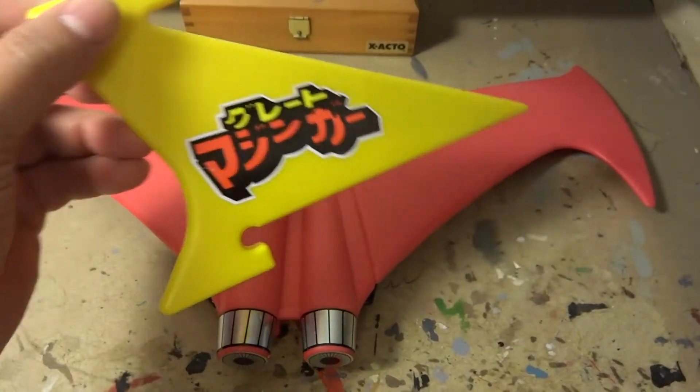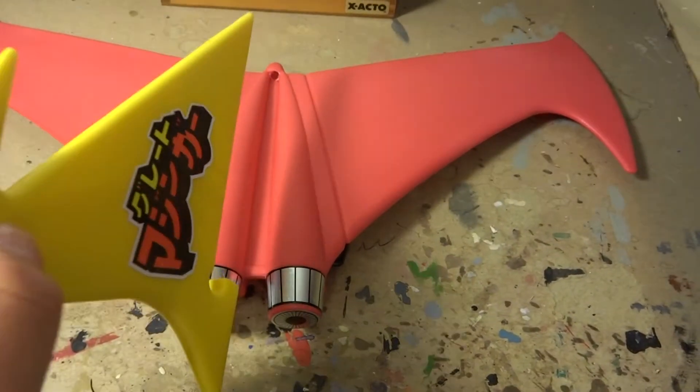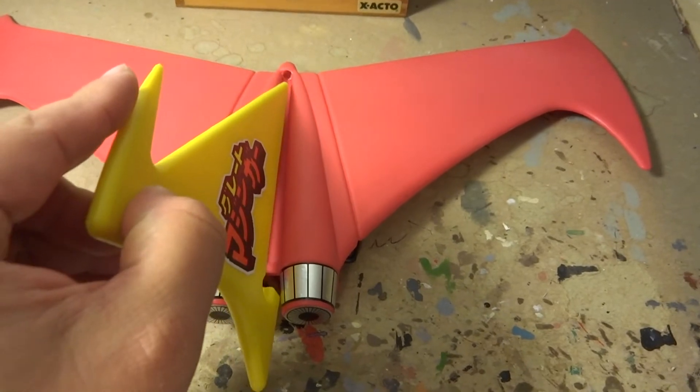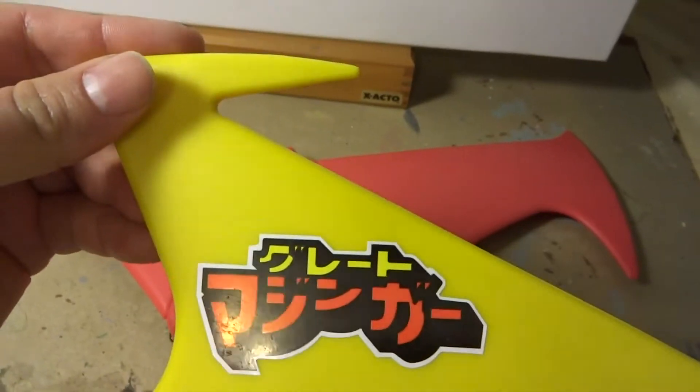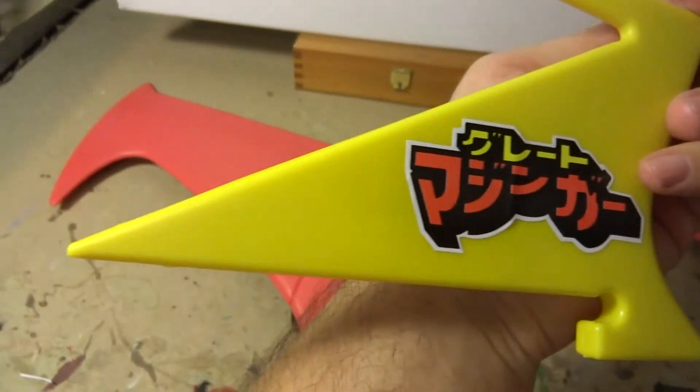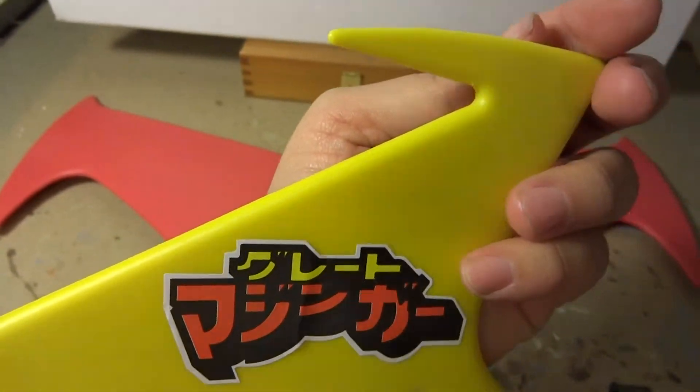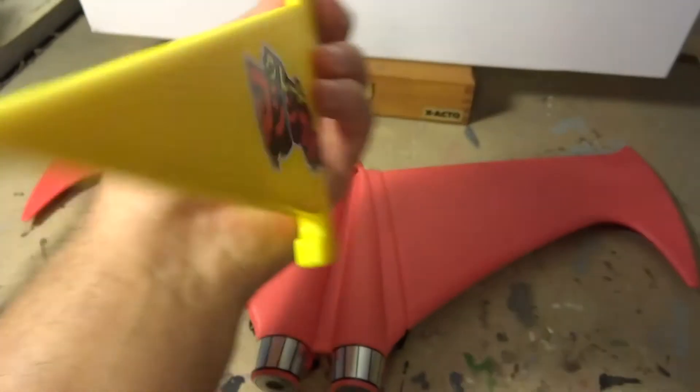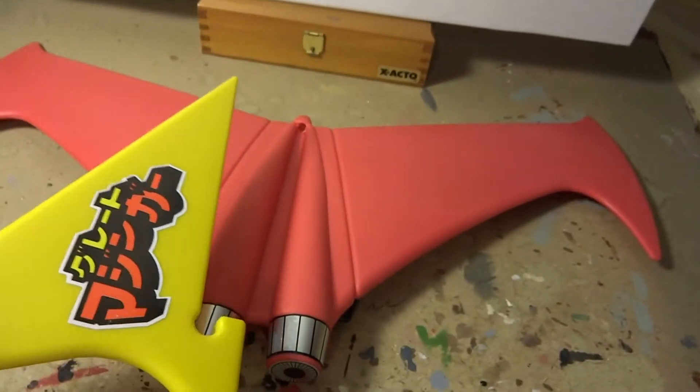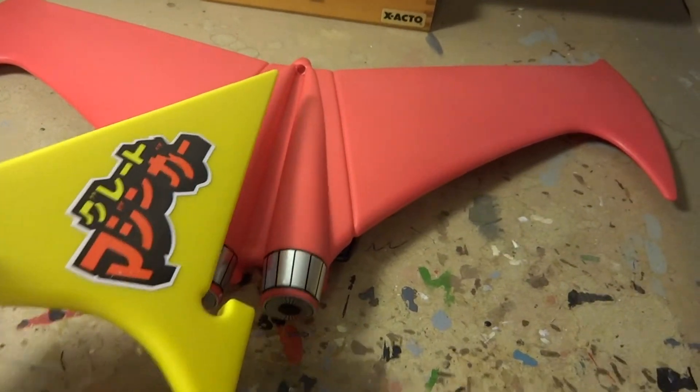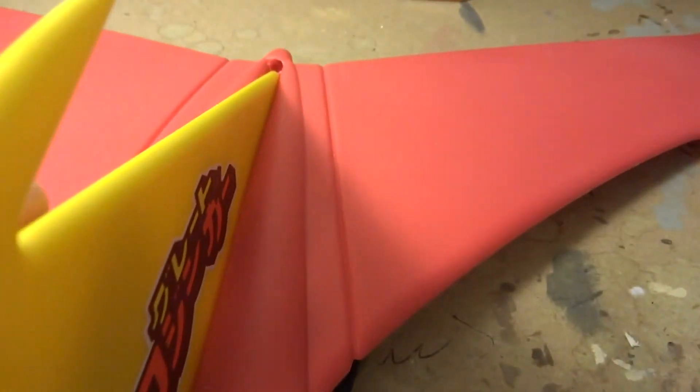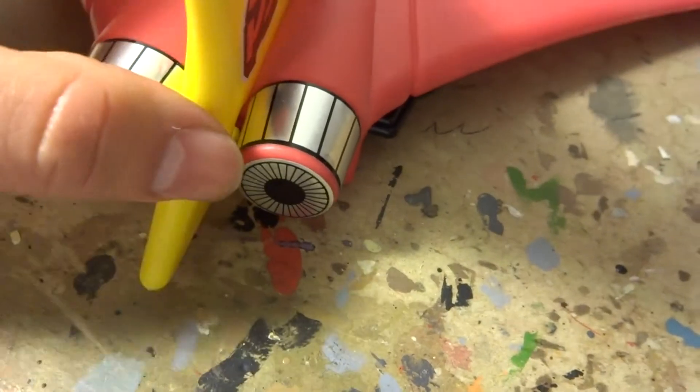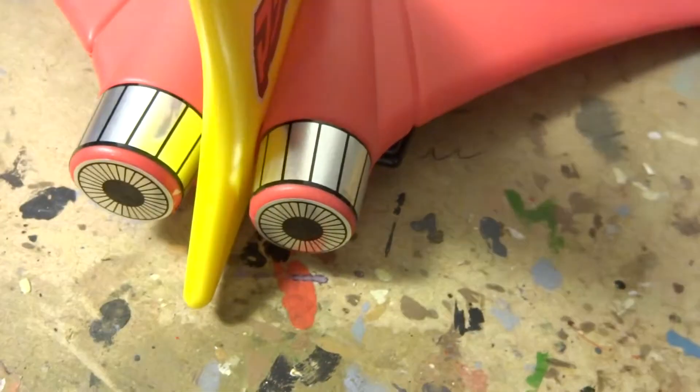This is the fin that will attach to the wings themselves. So there is some assembly required and it's beautifully cast. I'm no expert in casting but it's beautiful. This attaches very easily. You just slot it in like so and pops into place.